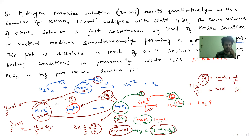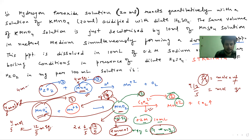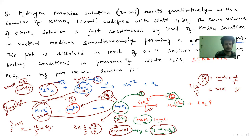Overall, the milliequivalents of MnO4- used is 4 milliequivalents. Now H2O2 n-factor is 2, so there are 4 milliequivalents. How many moles of H2O2 will be used? The n-factor difference is 2. Multiply and check. Finally, 2 millimoles of H2O2 are used.